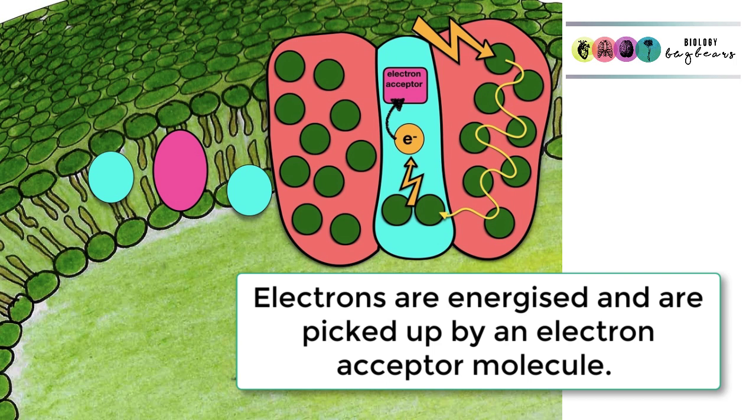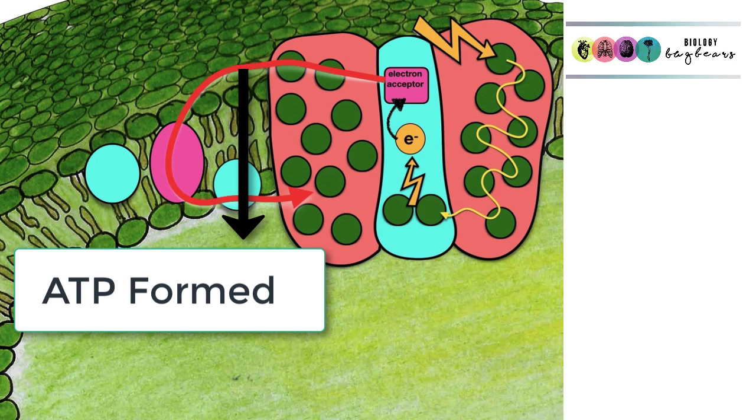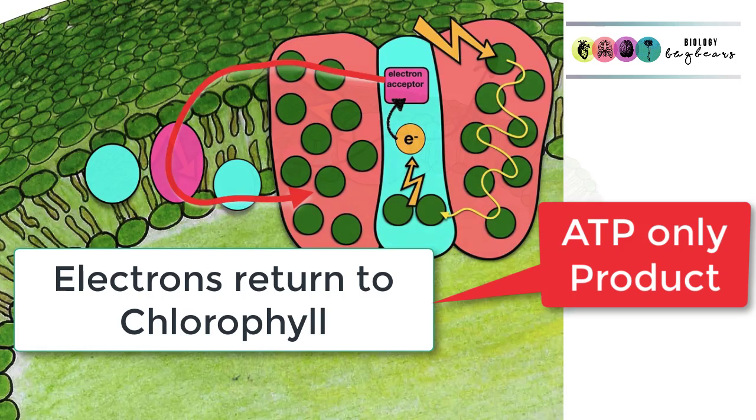This results in electrons being energized and passed to an electron acceptor molecule. Energized electrons then get passed over an electron transport chain, losing a lot of their excess energy and resulting in the formation of ATP. Eventually, those now low-energy electrons return back to chlorophyll in photosystem 1.